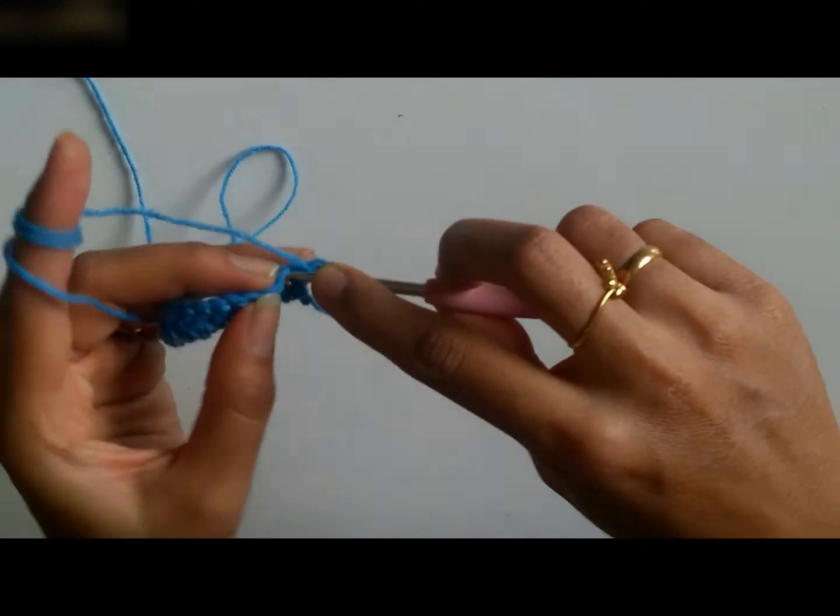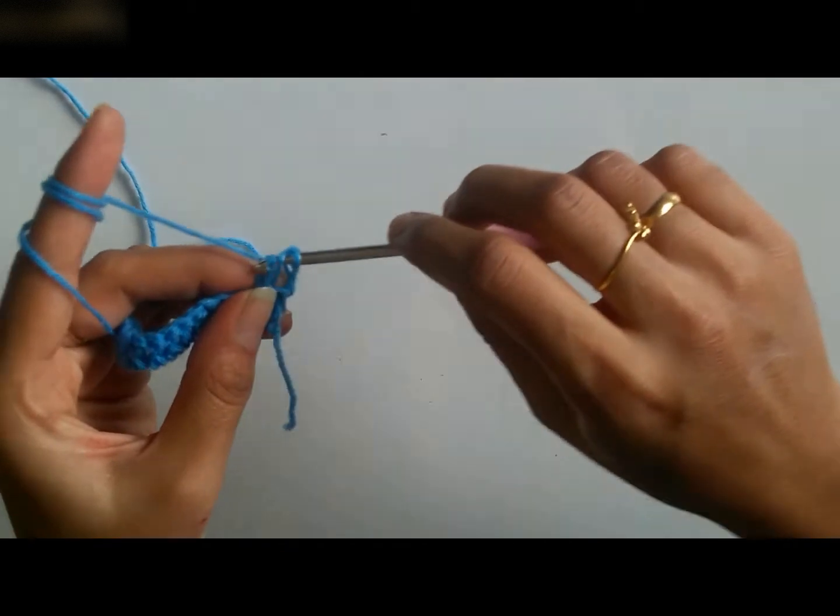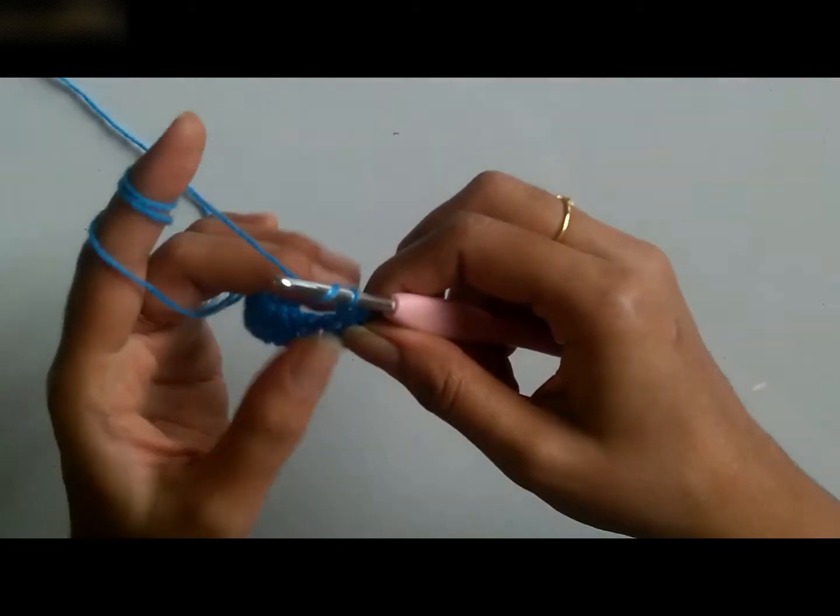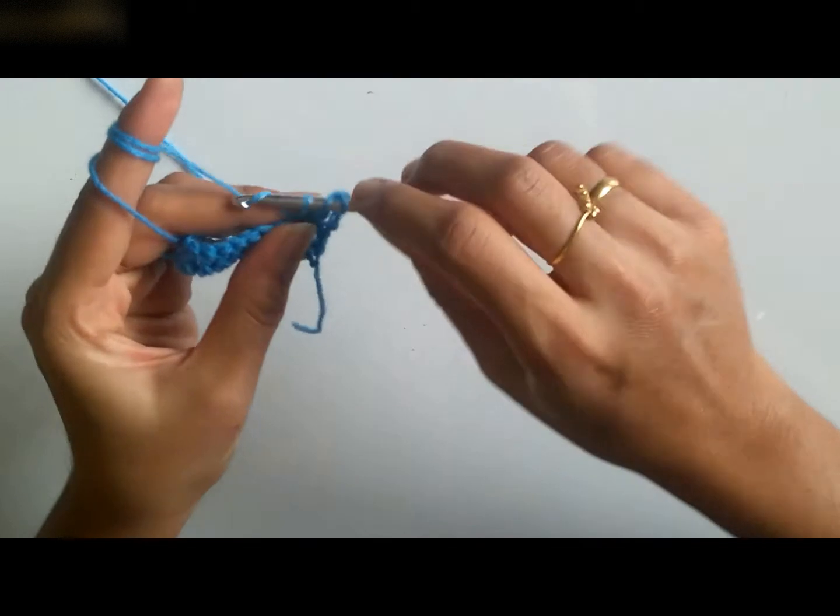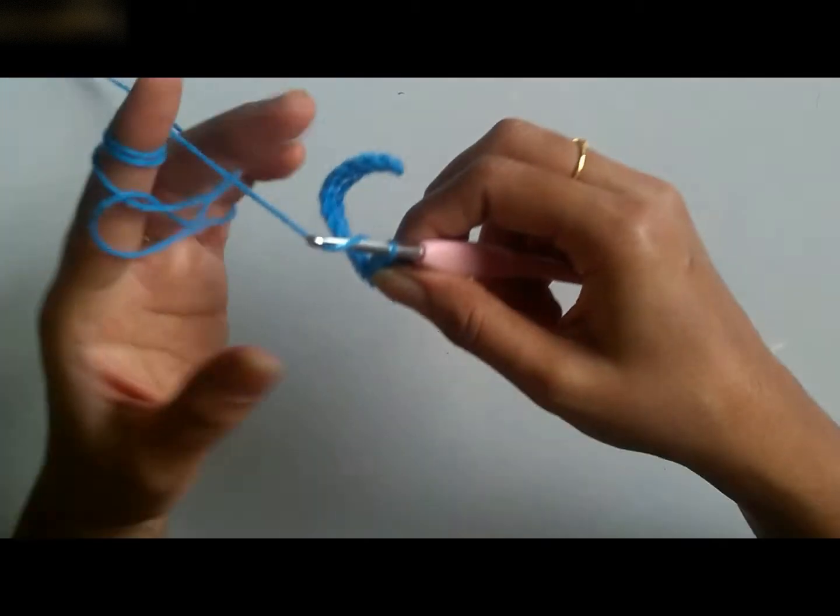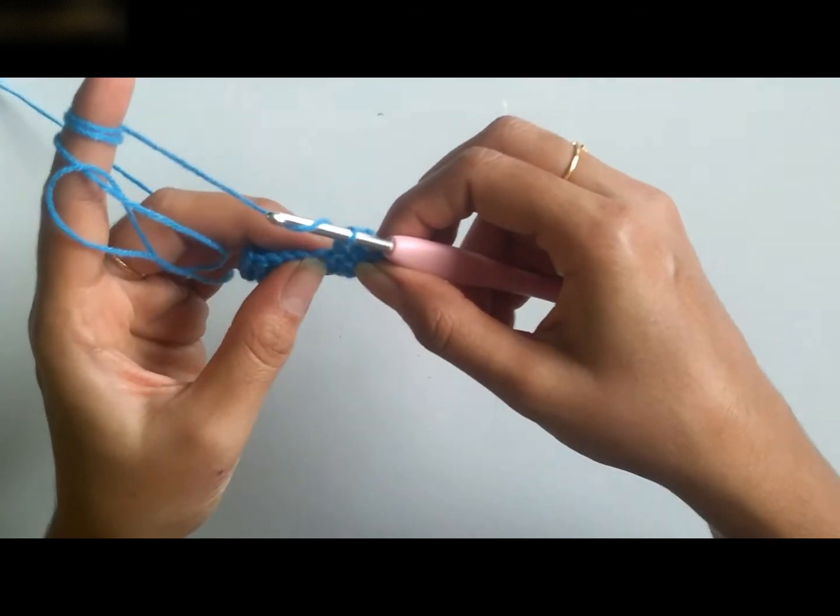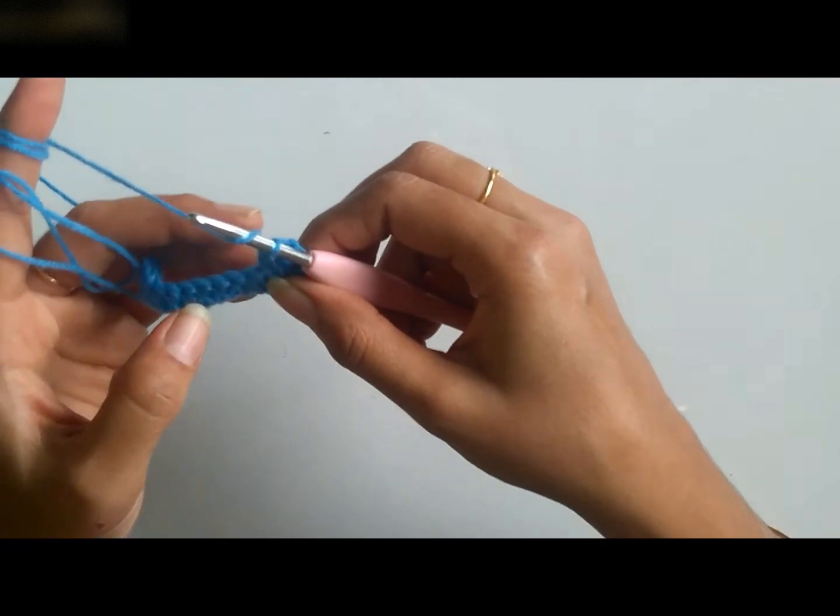Then I shall make two more double crochets. Since I am giving a spacing of three double crochets between each of the V-stitches. But it's not necessary. You can give as many double crochets as a spacing as you need for your design.